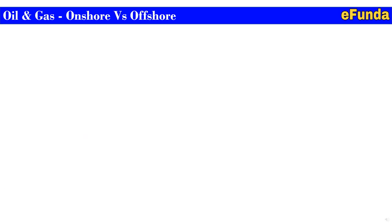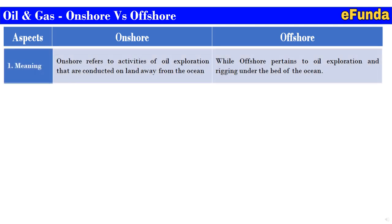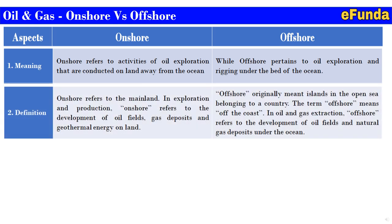Moving on to the actual differences of onshore versus offshore facilities. First, meaning: onshore refers to activities of oil exploration conducted on land away from the ocean, whereas offshore pertains to oil exploration and rigging under the bed of the ocean. Second, definition: onshore refers to the mainland — in exploration and production, it refers to the development of oil fields, gas deposits, and geothermal energy on land. Offshore originally meant islands in the open sea belonging to a country.